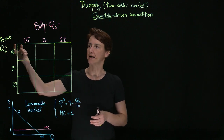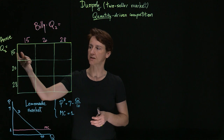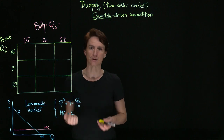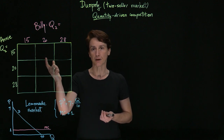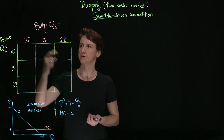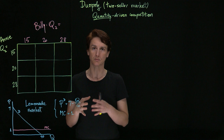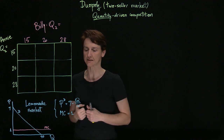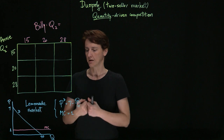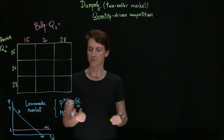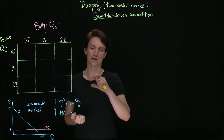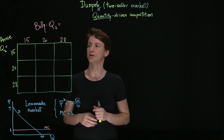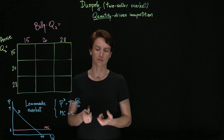Annie can make either 15, 20, or 28 glasses of lemonade, and the same for Billy. So let's see what their payoffs would be in this case. If they each make 15 glasses, then 30 will be made total. We plug that into the demand curve and we would find that the price in the market will be 4. At the price of 4 and a marginal cost of 1, they will each earn a profit of $3 per glass, so they will each earn $45 in profit.